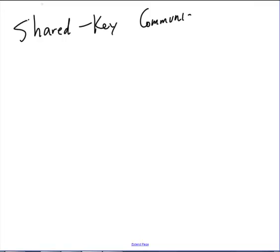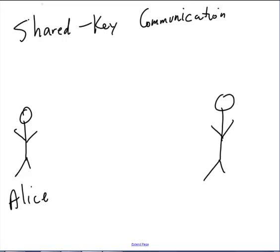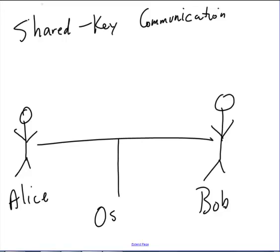Shared key communication is also often called private key communication or private key cryptography. We have two people — it is traditional to call them Alice and Bob — and they want to send email back and forth with that email free from prying eyes. The best way to do that is to encrypt it. Encryption works by using an algorithm that scrambles the bits of your message so it looks like garbage to Oscar, our malevolent eavesdropper. The only people who can decrypt that message are those who have a key to the algorithm — just a string of ones and zeros that holds the key to de-scrambling the message.